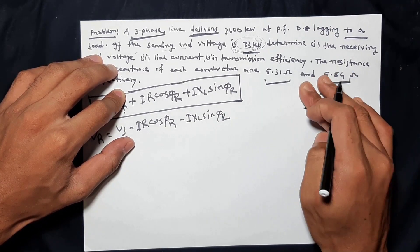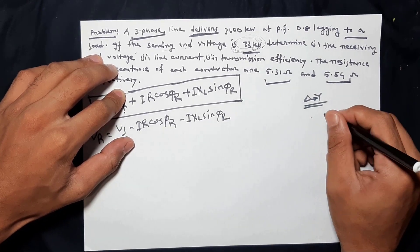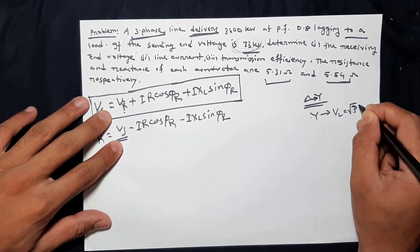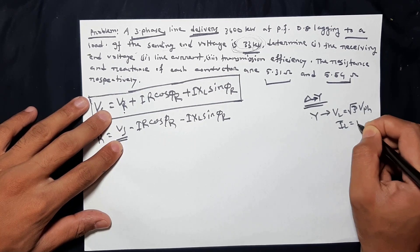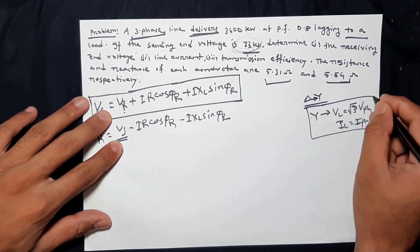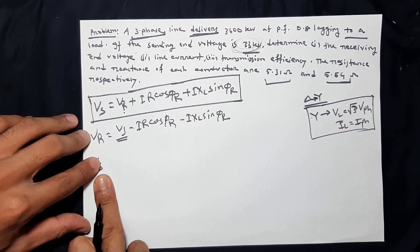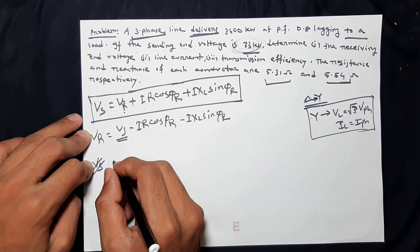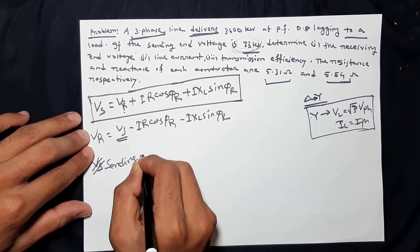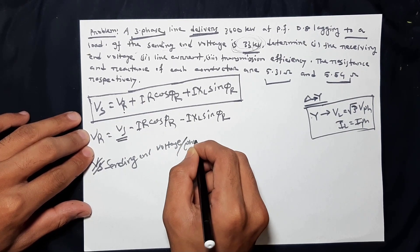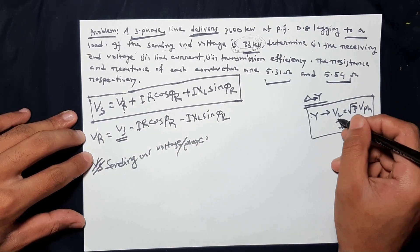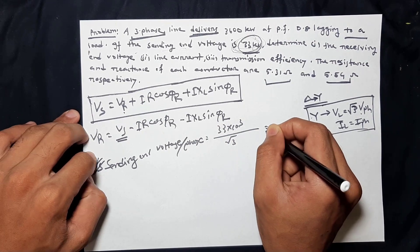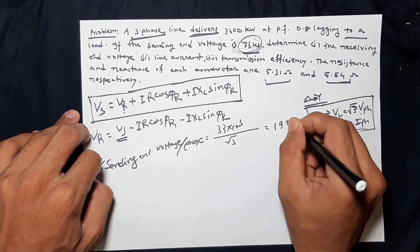That means when we have the transmission line, it's a star connection. The line voltage is a function of the line voltage — it's VPH. A line current and phase voltage. The voltage per phase: the line voltage is root 3, so phase voltage is the line voltage divided by root 3. We will change the phase voltage. Phase voltage is the value of 19052 volt.